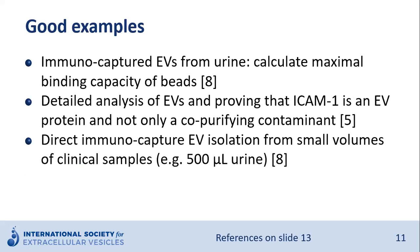Some good examples: in one study, EVs were immunocaptured from urine and the authors provided a theoretical model to calculate the maximal binding capacity of the beads, which is extremely important for determining how many beads are needed for an experiment. In another study, the authors focused on EV ICAM-1 levels and carried out careful analysis proving that ICAM-1 is an EV protein and not merely a contaminant from the immunocapture method. Direct immunocapture EV isolation from small amounts of clinical samples is also possible — for example, one study isolated EVs from 500 microliter urine.